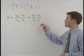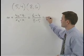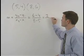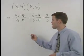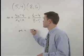So 6 minus 4 over 8 minus 5 simplifies to 2 over 3. The slope of this line is 2 thirds.